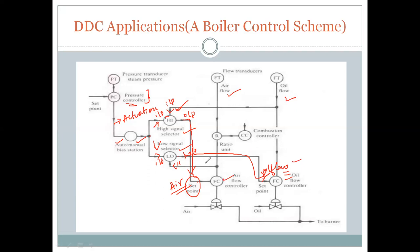A ratio unit is installed in the airflow measurement line. A signal from the controller which monitors the combustion flame directly is added to the airflow signal to provide the input.